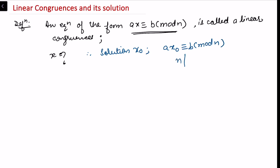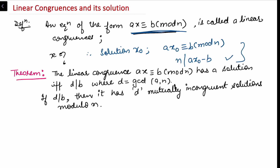If this congruence holds, then n divides ax₀ minus b. To understand the solution, we use the theorem: the linear congruence ax ≡ b (mod n) has a solution if and only if d divides b, where d is the gcd of a and n. If d divides b, then it has d mutually incongruent solutions modulo n. We have two assertions to prove.